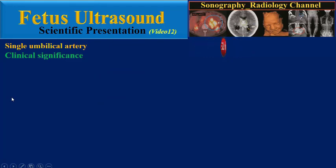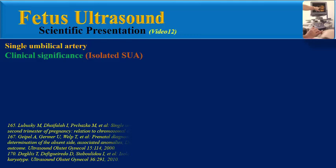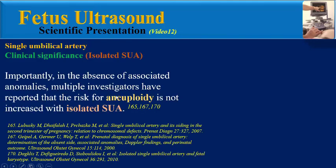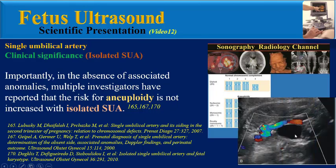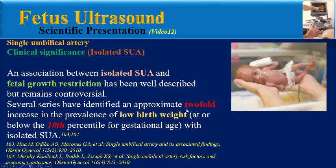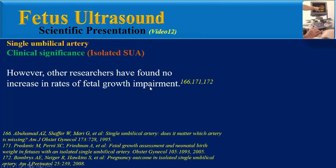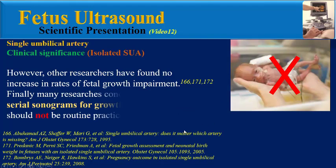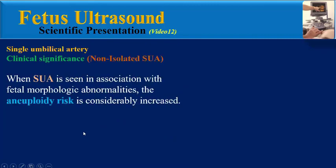Regarding clinical significance, the most important point is whether the finding is isolated or non-isolated. For isolated single umbilical artery, in the absence of associated anomalies, multiple investigators have reported that the risk for aneuploidy is not increased. An association between isolated single umbilical artery and fetal growth restriction has been described but remains controversial. Several series have identified an approximate two-fold increase in low birth weight, while other researchers have found no increase. Many researchers conclude that serial sonograms for growth assessment should not be routine practice.